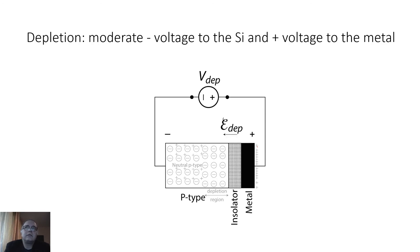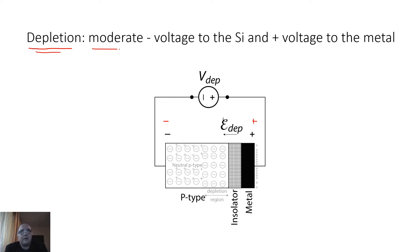Now let's discuss the next operation mode of the MOS structure, which is the depletion mode. For this mode of operation we invert the polarity of the external applied voltage — we connect the positive terminal to the metal and the negative to the semiconductor, so the direction of the electric field is from the metal to the semiconductor. An important note is that we apply small to moderate voltages.